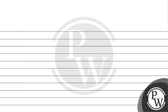Next, we have NO2. NO2 is basically an odd electron molecule. Because it is an odd electron molecule, its bond angle is somewhat greater than 120 degrees.